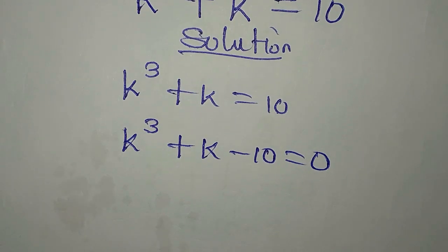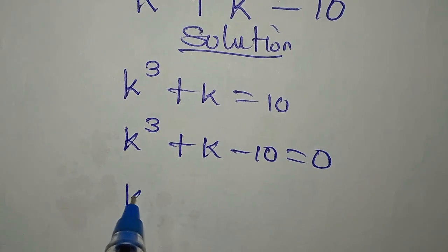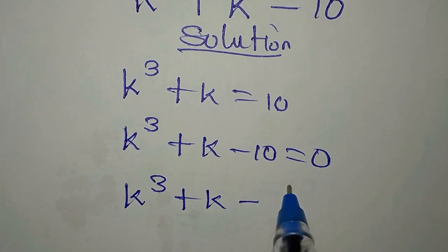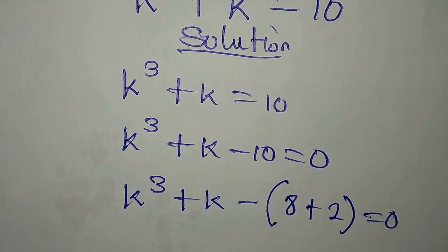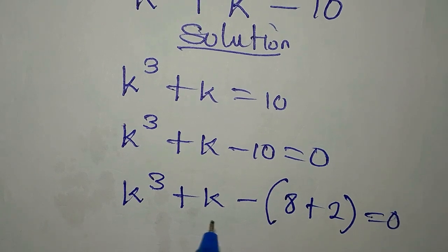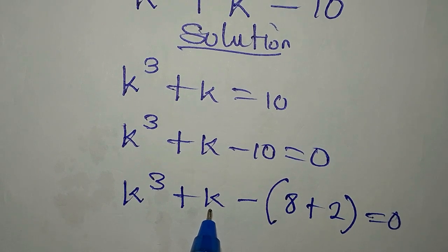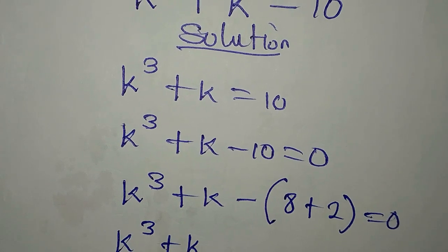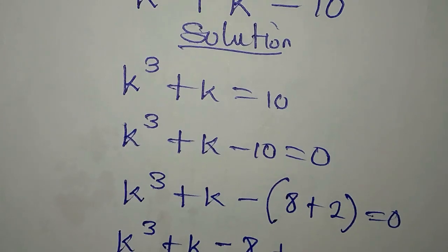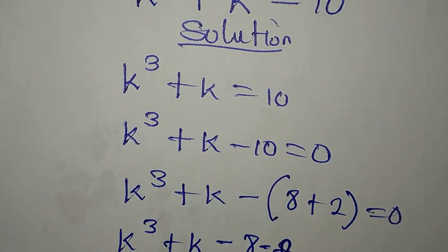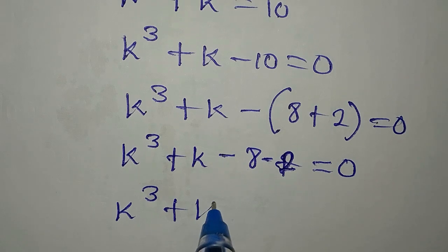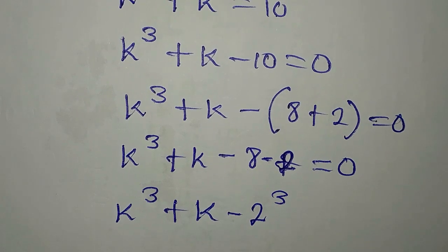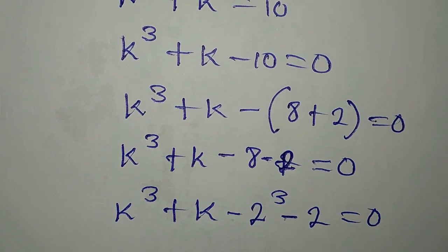Now I will try to write 10 in a useful form. We have k to the power of 3 plus k minus open bracket 8 plus 2, because 8 plus 2 is 10, and everything equals zero. I am using 8 plus 2 because 8 can be written as 2 to the power of 3, and 2 is already in the form of k. So we now have k to the power of 3 plus k, minus 2 to the power of 3, minus 2, equals zero.